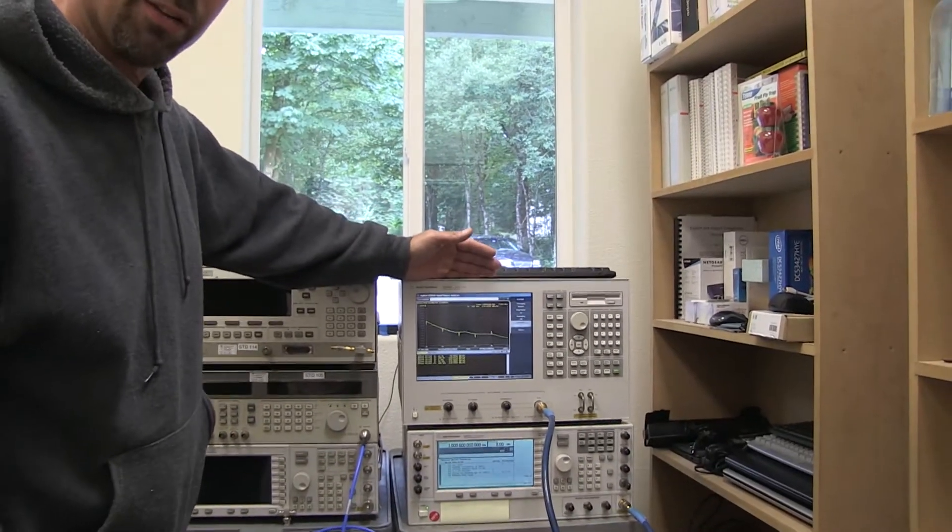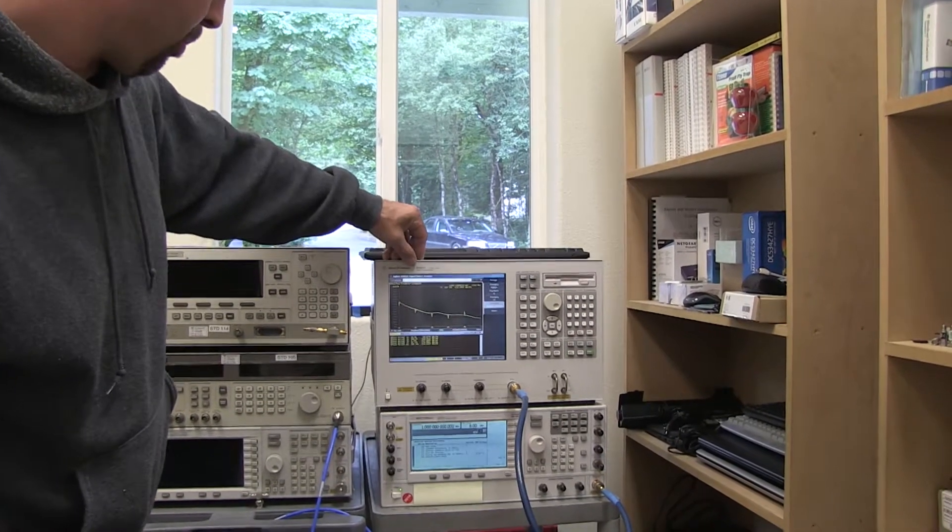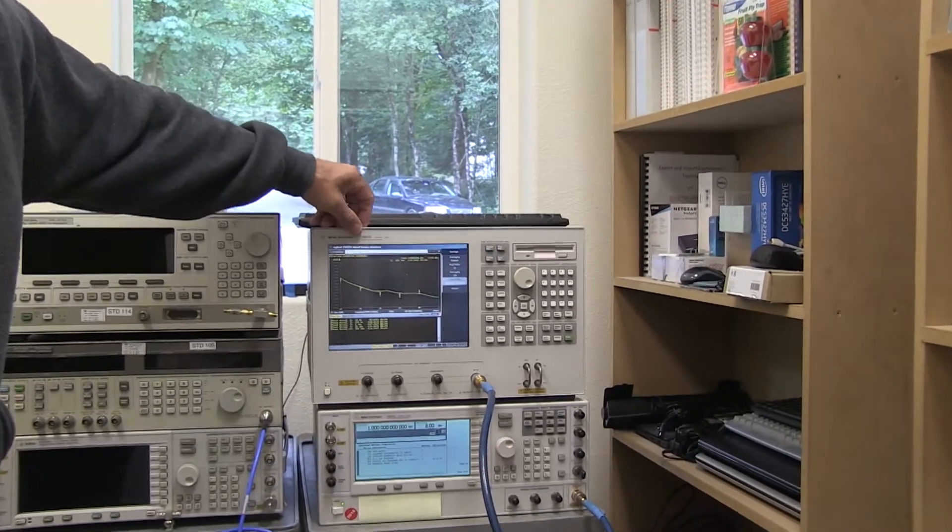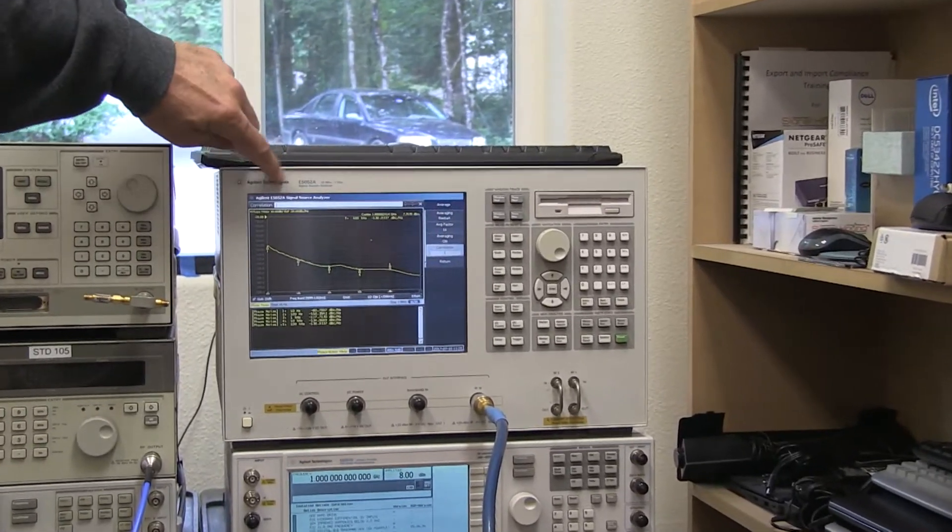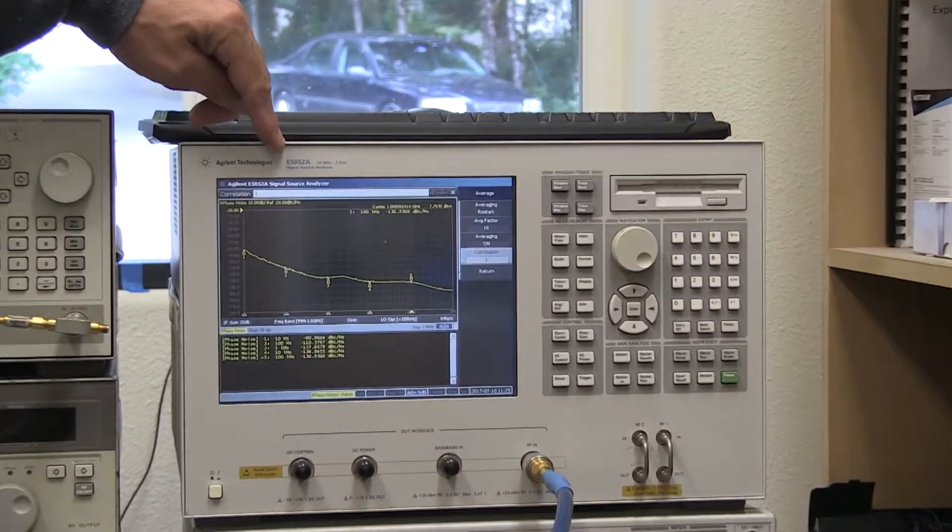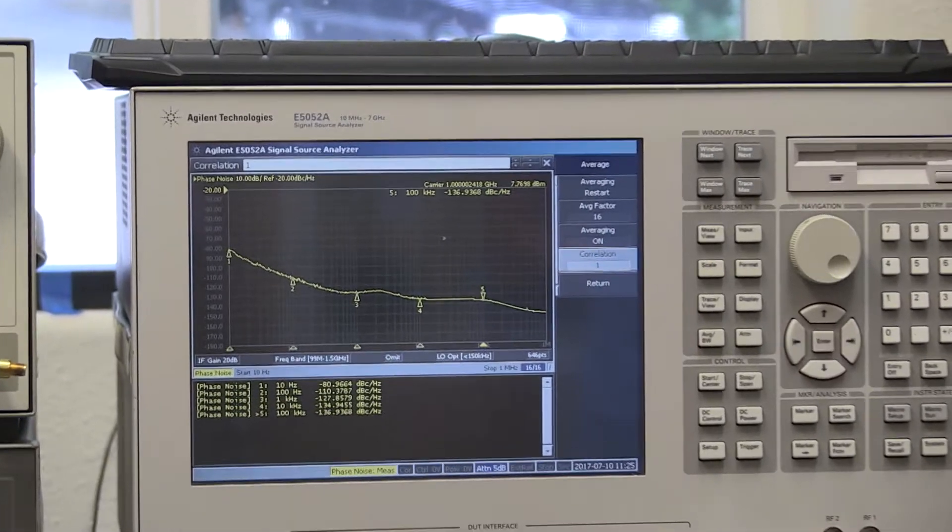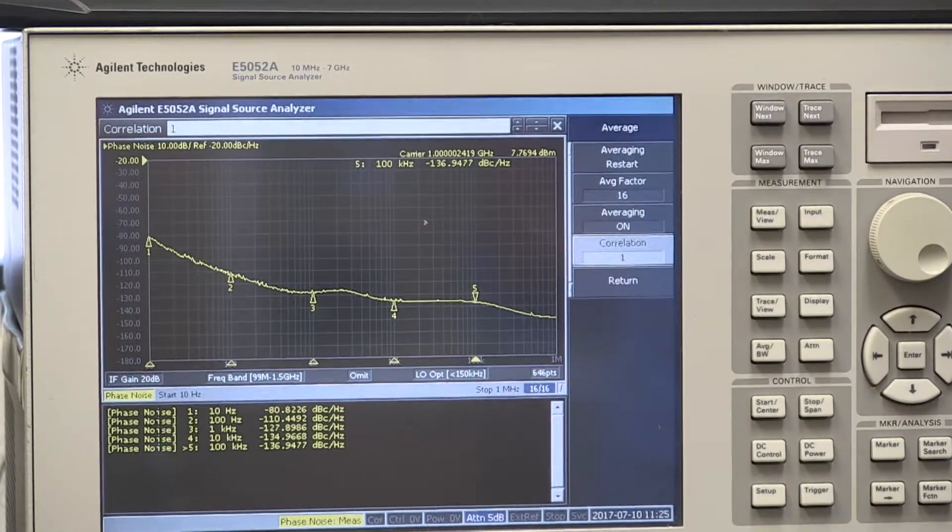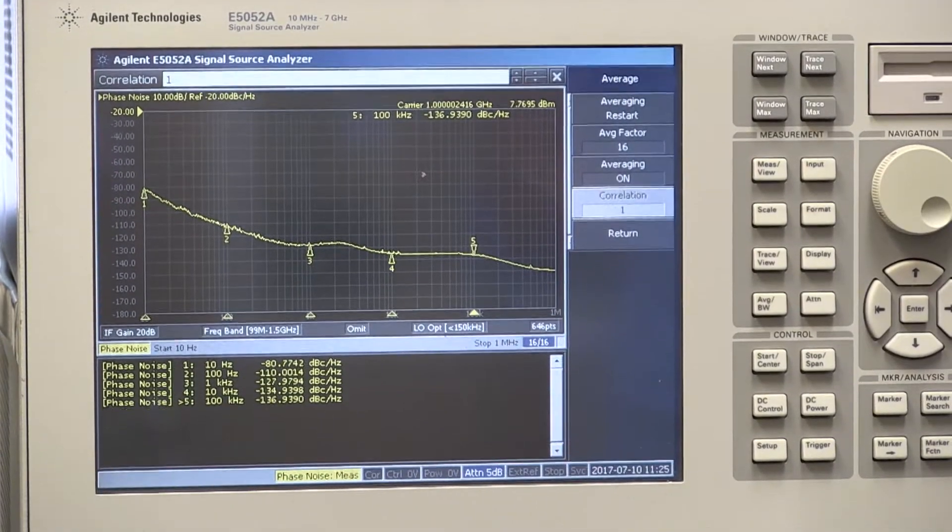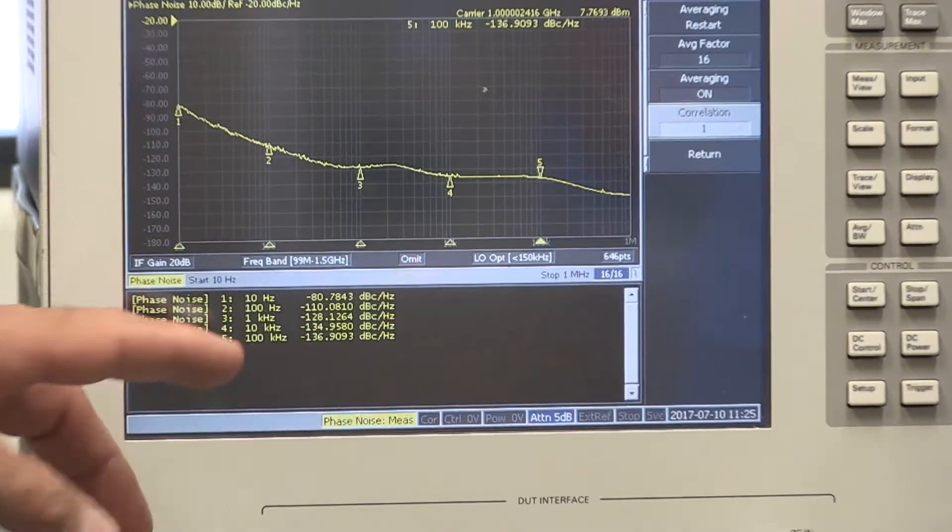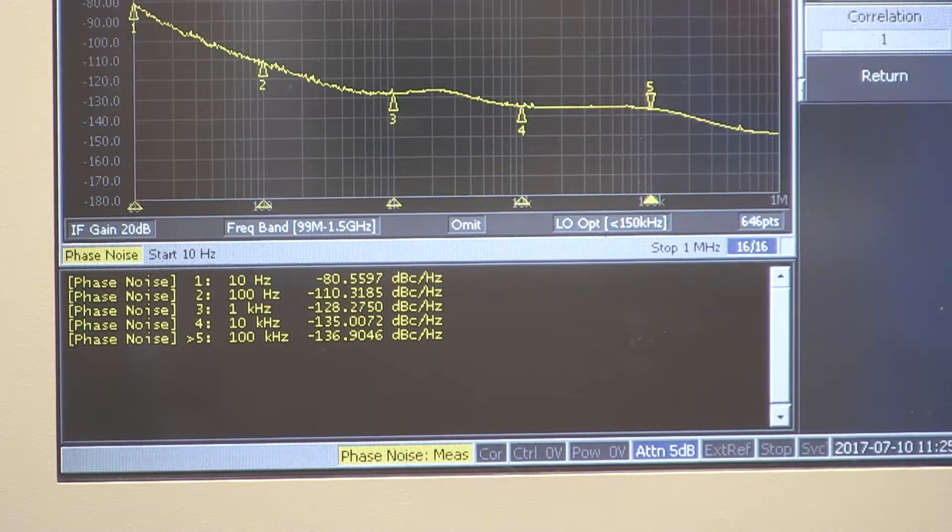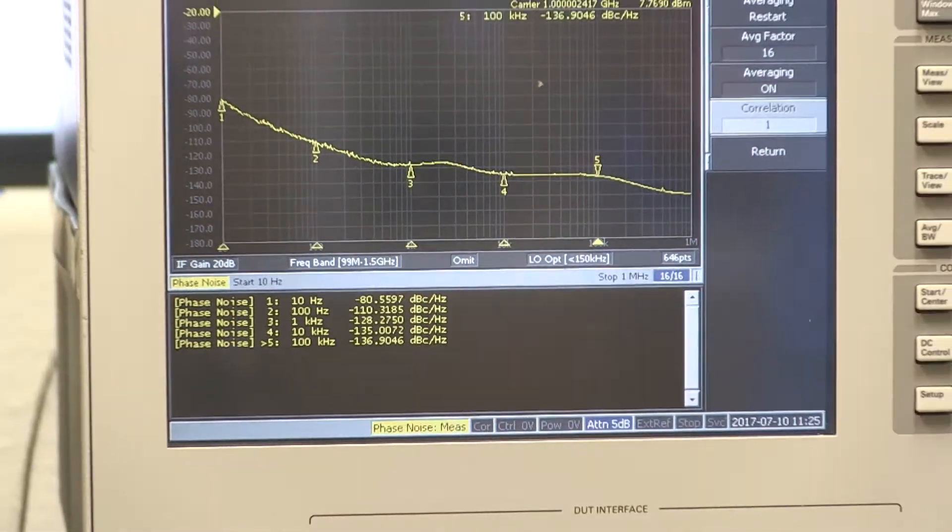We wanted to do a comparison today. So we've plugged in our generator into an E5052, this is a signal source analyzer, another Agilent box, just to do a comparison. Right now we're looking at a 1 gig signal at 8 dBm and right now we've measured from 10 Hz offset to 100 kHz offset, which is the same spec that the SM200 actually specifies.